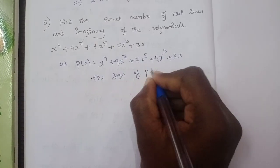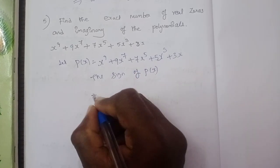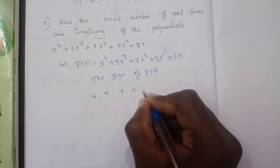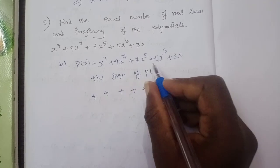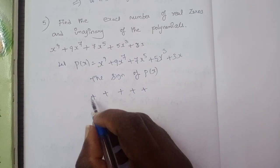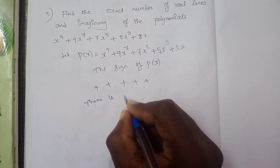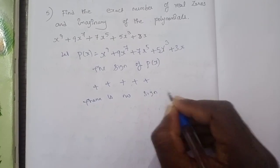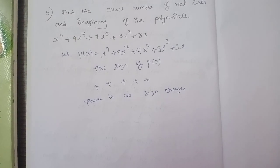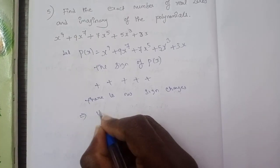This is the sign of P(x). The signs are all positive: positive, positive, positive, positive, positive - 1, 2, 3, 4, 5. So there is no sign change. There is no sign changes, so it has no positive values.